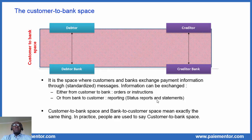Now, when information is sent from the bank to the customer, it is reporting. The bank is informing the customer about the status of an order that was previously sent by the customer. The bank also sends account statements to customers — another kind of reporting. It is interesting to note that customer to bank space and bank to customer space mean exactly the same thing. In practice, people usually say customer to bank space.